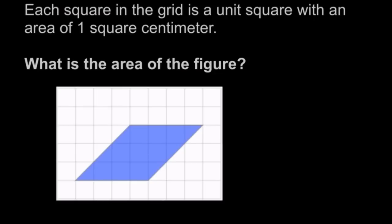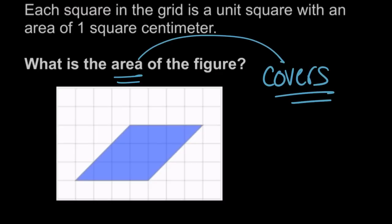And now we're asked what is the area of the figure. By figure, I'm sure they mean this bluish, purplish quadrilateral, and we want to know its area. Area is talking about how much space the shape covers. How much space does this quadrilateral cover? How many square centimeters does the quadrilateral cover?